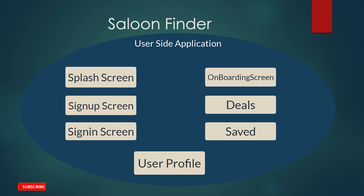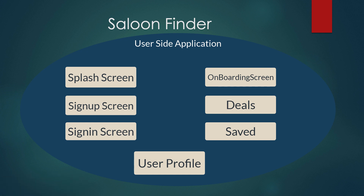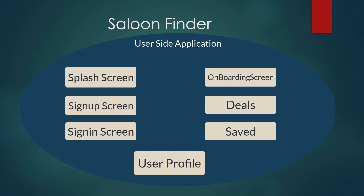Our splash screen consists of a logo in the center, and our signup screen and sign-in screen consist of input fields. For the onboarding screen, there is a Material Bottom Tab Navigation used, which involves four screens: Home, Deals, User Profile, and Saved.